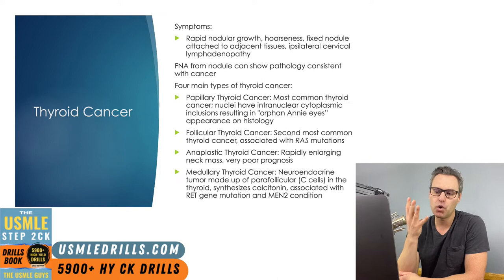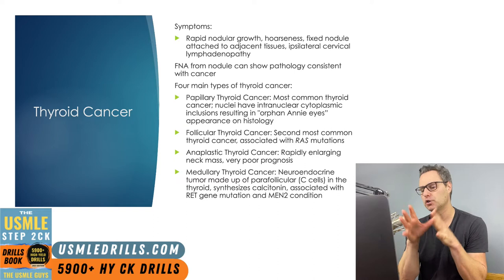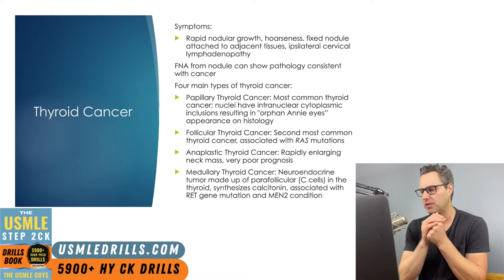There are four main types of thyroid cancer to be aware of for this exam. The first is papillary thyroid cancer — the most common form. On histology, there's a very characteristic finding known as the orphan Annie nuclei, which are nuclei that have intranuclear cytoplasmic inclusions. Then we have follicular thyroid cancer, the second most common type, which is associated with the RAS mutation.